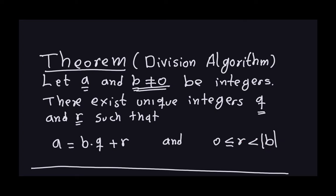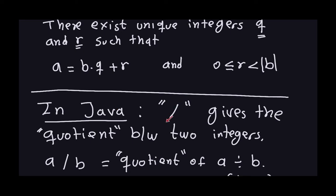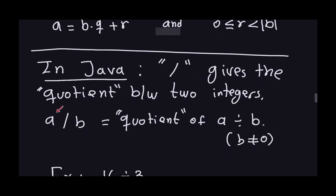So that's the difference — if we allow b to be negative, the condition should be r less than the absolute value of b. Now how is this in Java? There is good news and bad news. The good news is that there are a couple of methods in Java that allow you to calculate the quotient q and the remainder r. The bad news is that they don't actually work exactly the way you think they will with the division algorithm. In Java, the slash operator is the method used to compute the quotient between two integers — I put 'quotient' in quotes because it doesn't work exactly well when you have negative numbers.